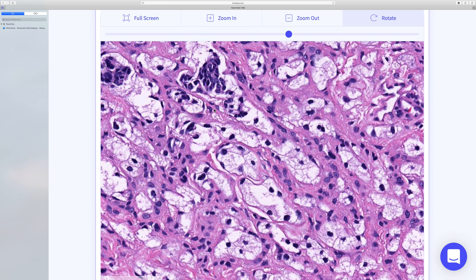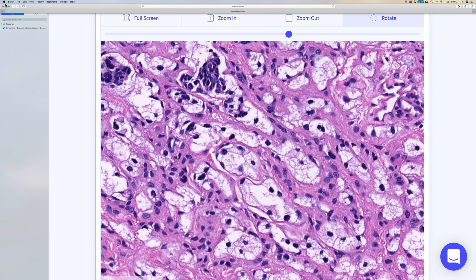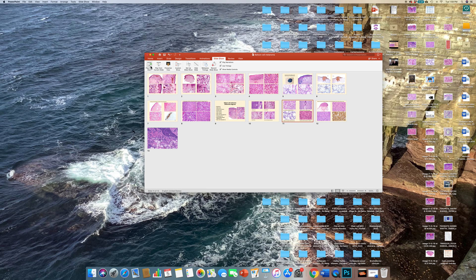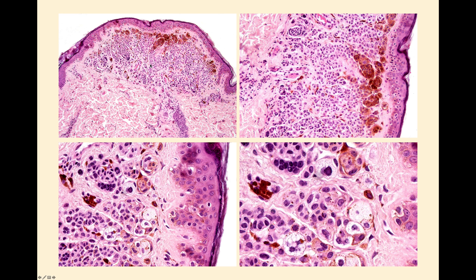I thought it would be quite nice to look at some other balloon cell lesions, so I'm going to exit Kiko and pull up a PowerPoint presentation. This is a nice example of balloon cell nevus where there are only a few scattered balloon cells. People make a big deal about whether it's a balloon cell nevus or nevus with balloon cell change, and they have a cut-off figure of 50%, which seems to me to be an entirely pointless observation.